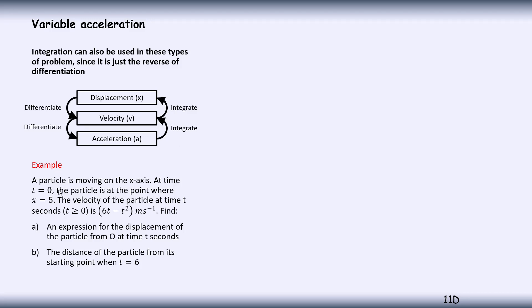So let's have a look at this example. We've got a particle moving on the x-axis. At time t equals 0, the particle is at a point where x equals 5. So when time is 0, displacement is already 5, so we've got to be careful with that. Velocity of the particle is given by 6t minus t squared, and we're told that time is always positive. Find an expression for the displacement from O at time t seconds.